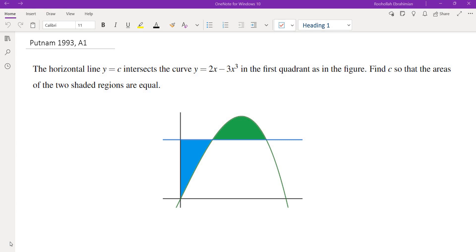The horizontal line y equals c intersects the curve y equals 2x minus 3x cubed which has a root at 0 here and a root at square root of 2 thirds right here.